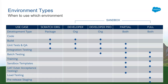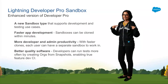I would be remiss if I spoke about all of these environment types and didn't mention the latest announcement from the platform keynote this year. What we announced was the Lightning Developer Pro sandbox — an enhanced version of our Developer Pro sandbox. This sandbox is going to make your developers and admins more productive. You're going to be able to do faster app development and have better quality software. The reason it's going to do all this is because of two main features included in the Lightning Developer Pro sandbox: one is quick cloning.